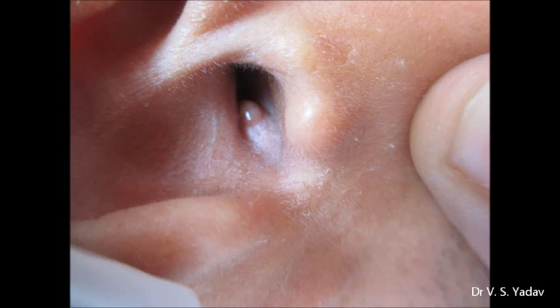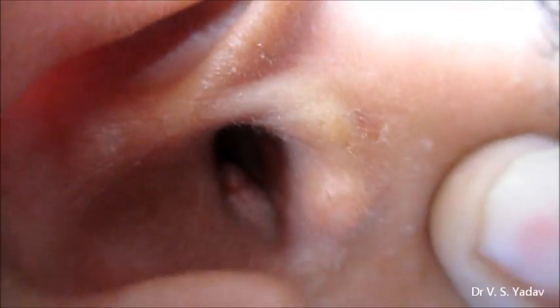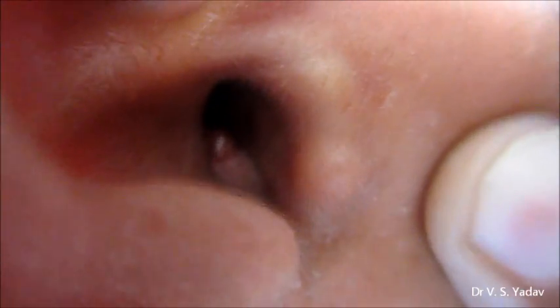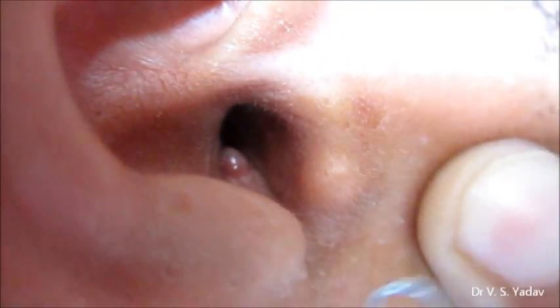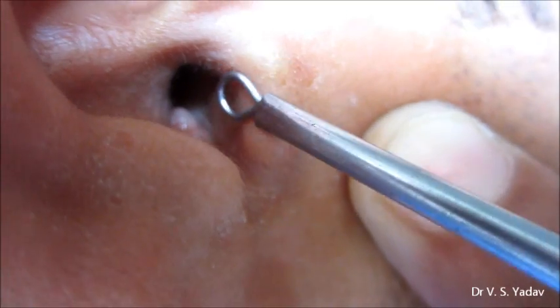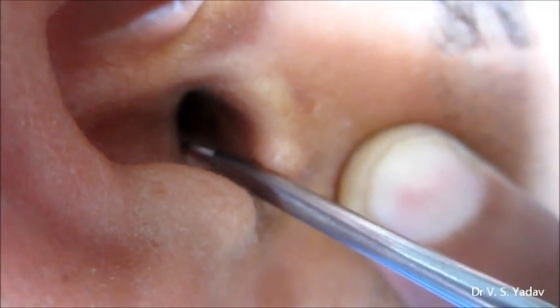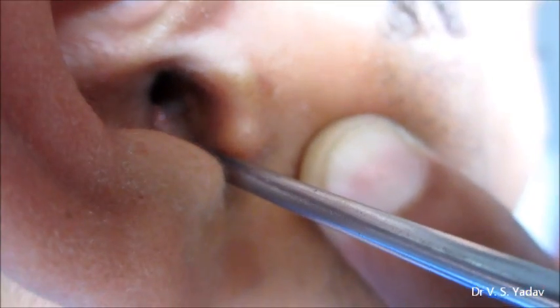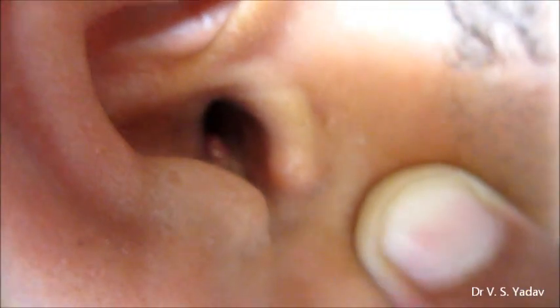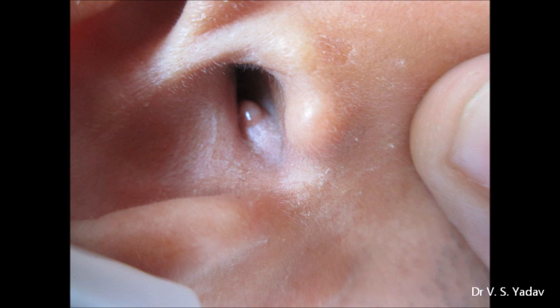This is a furuncle in the external auditory canal. This furuncle is present in the cartilaginous part of the auditory canal, which is the outermost one-third part. It is about eight millimeters in size. This part contains numerous hairs.